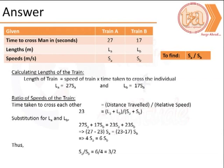By substituting for LA and LB from the earlier equations, we get (23 - 17)SB equals (27 - 23)SA. Therefore, SA/SB is 6/4 or 3/2.